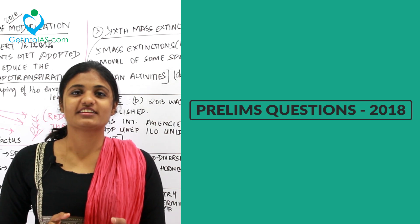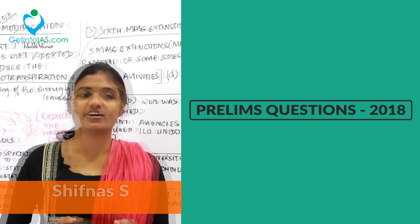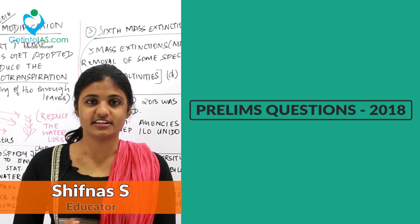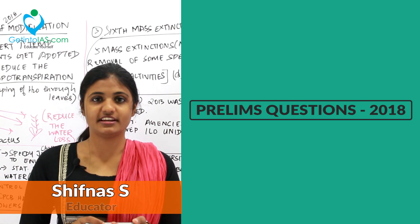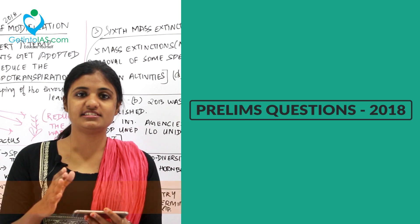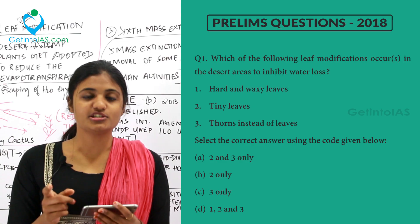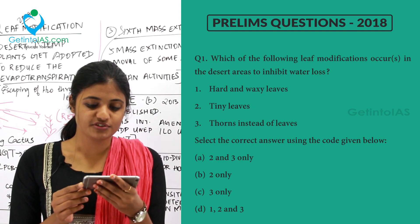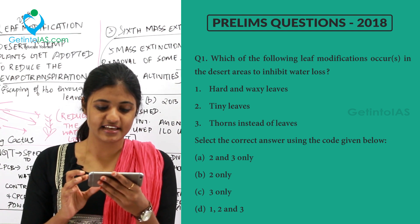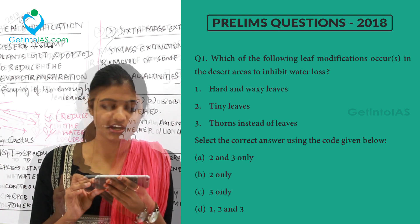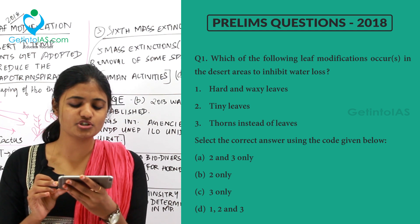Hello all, welcome to Get into IAS. In this video we are going to deal with the last five years prelims questions related to environment. Let's deal with the 2018 questions. The first question is: which of the following leaf modifications occur in the desert areas to inhibit water loss? The first option given is hard and waxy leaves, tiny leaves, thorns instead of leaves.